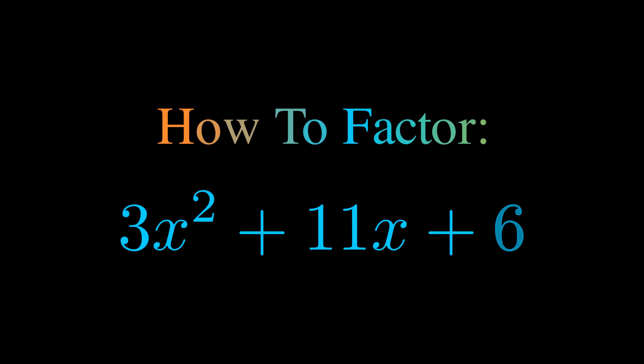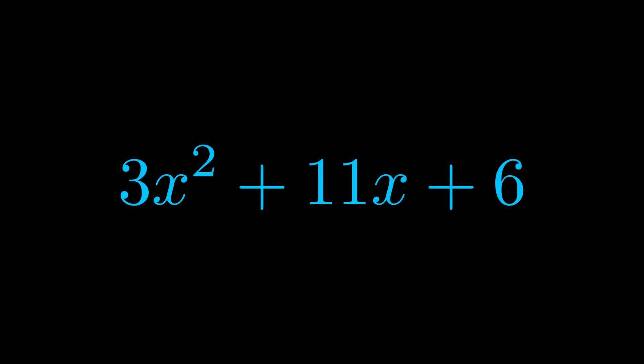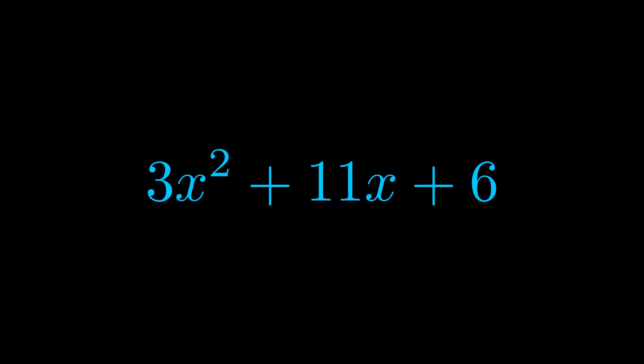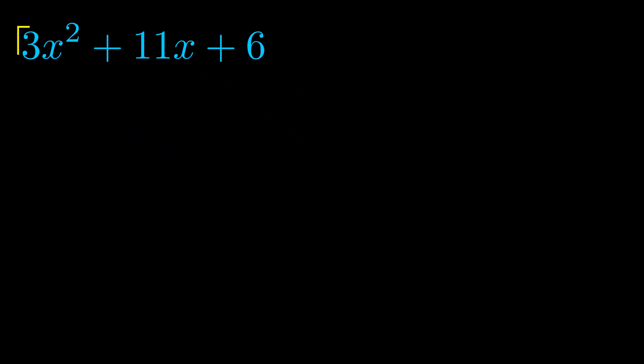In this video we're going to learn how to factor this equation. Step one when factoring an equation of this form is to multiply the a value by the c value. Here we can see that our a value is the coefficient on the x squared term and our c value is the constant term. When we multiply these two values we get this value here in magenta.